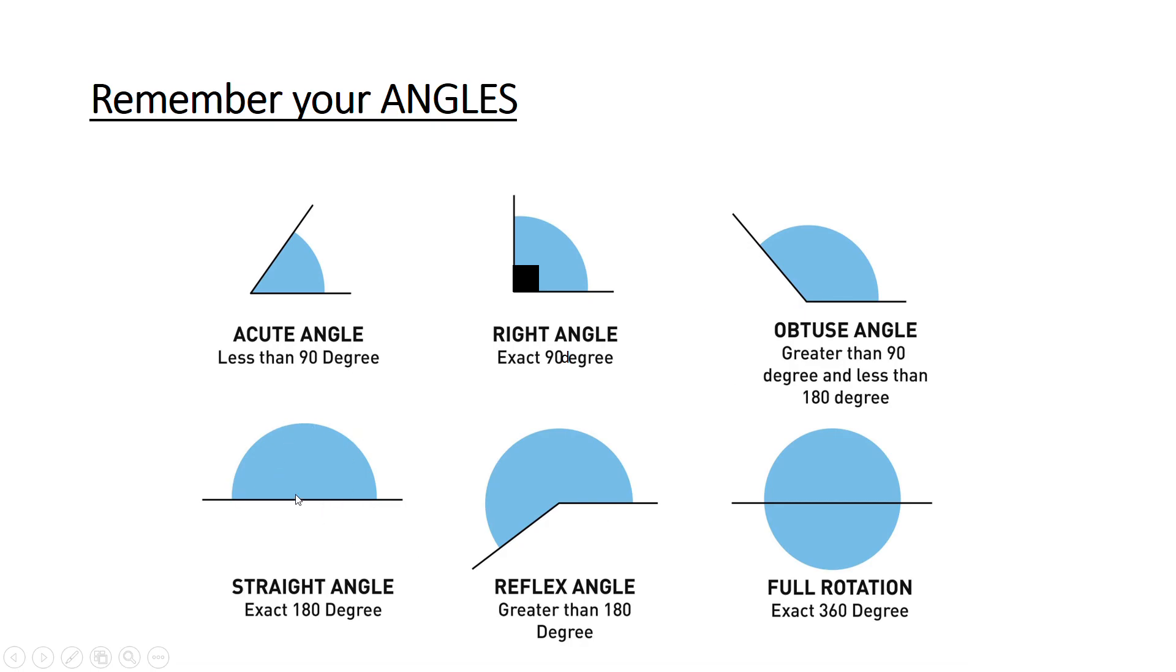Then you've got your straight line, which is basically the angles on a straight line, which all add up to 180 degrees. Your reflex is your second largest one, so it's smaller than 360, but bigger than 180. Then your last one is your revolution, so that's exactly 360 degrees.